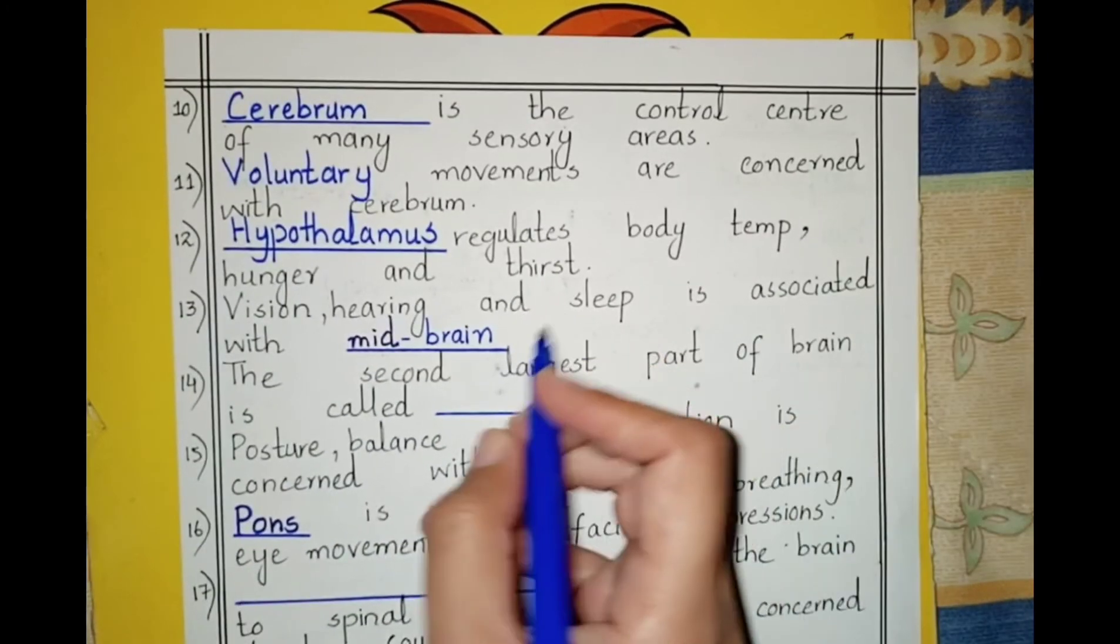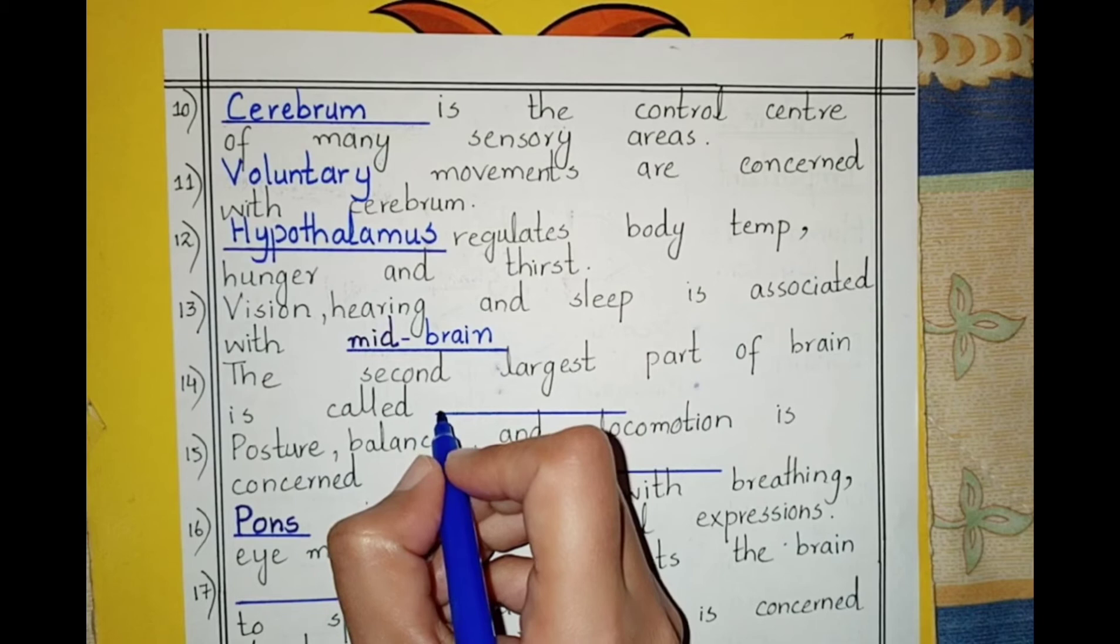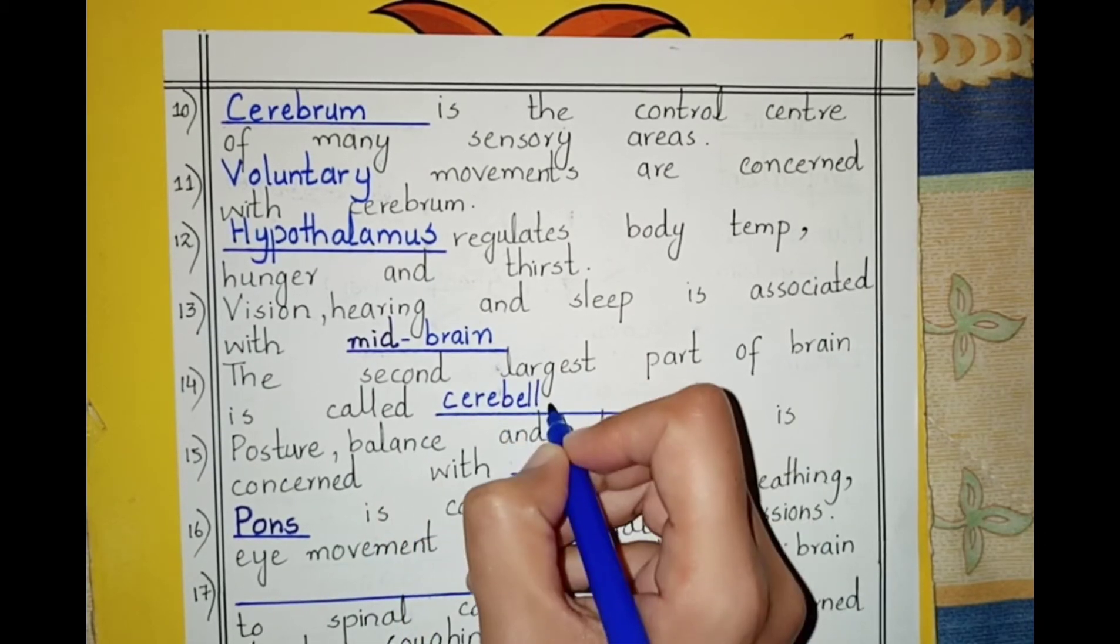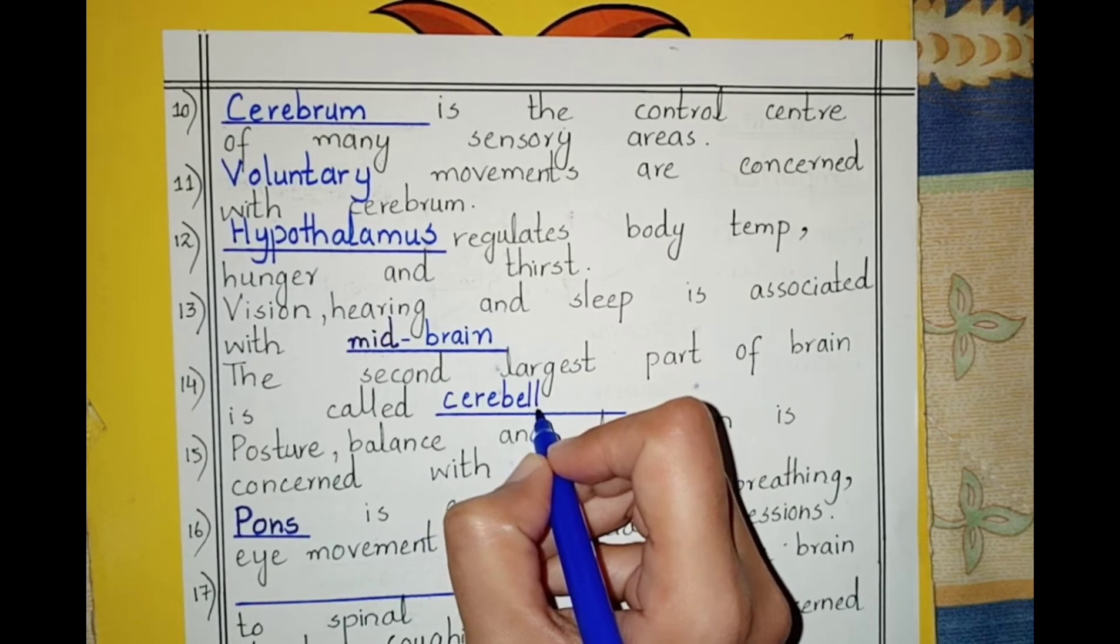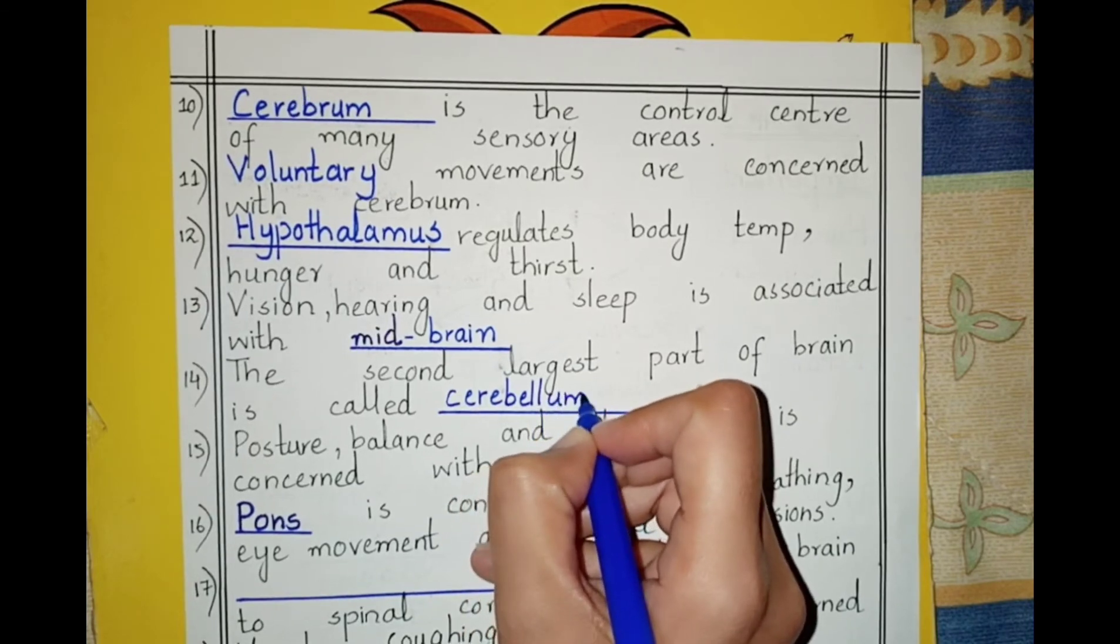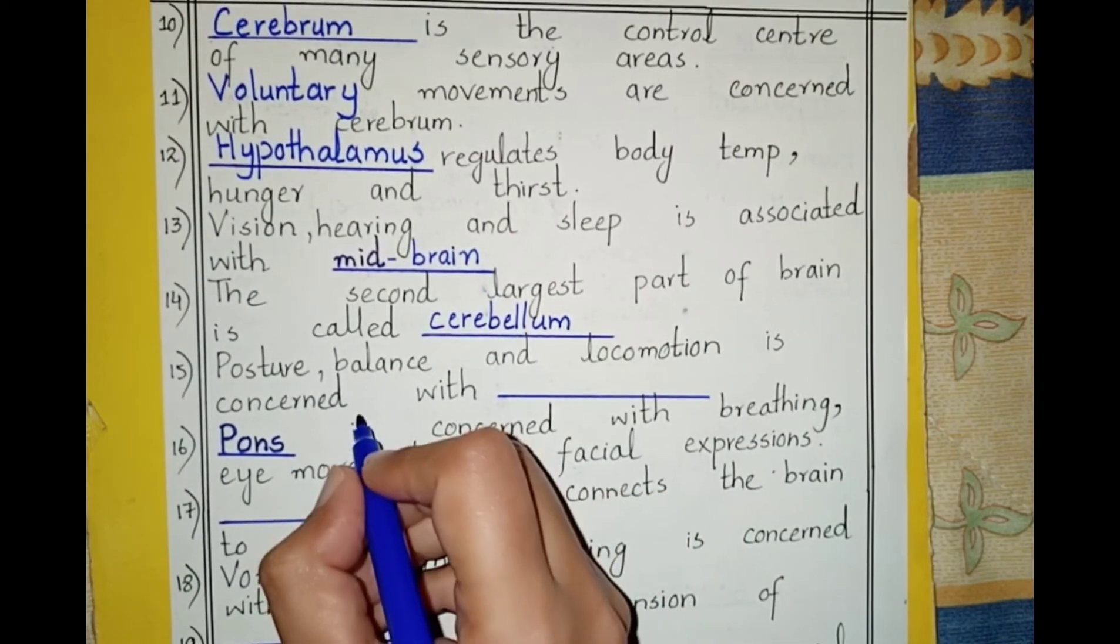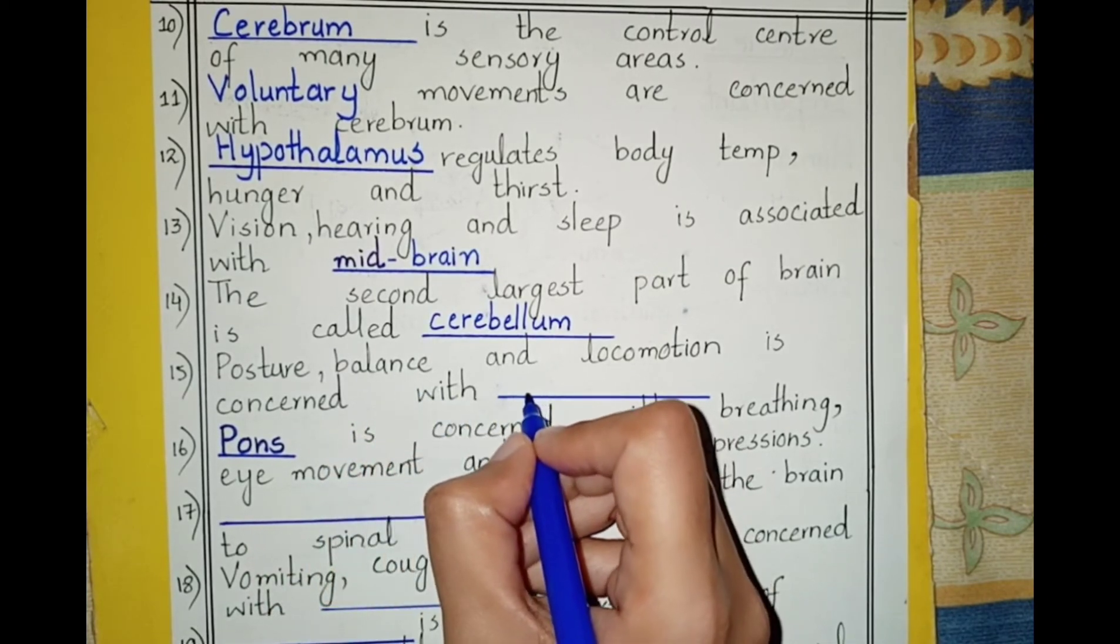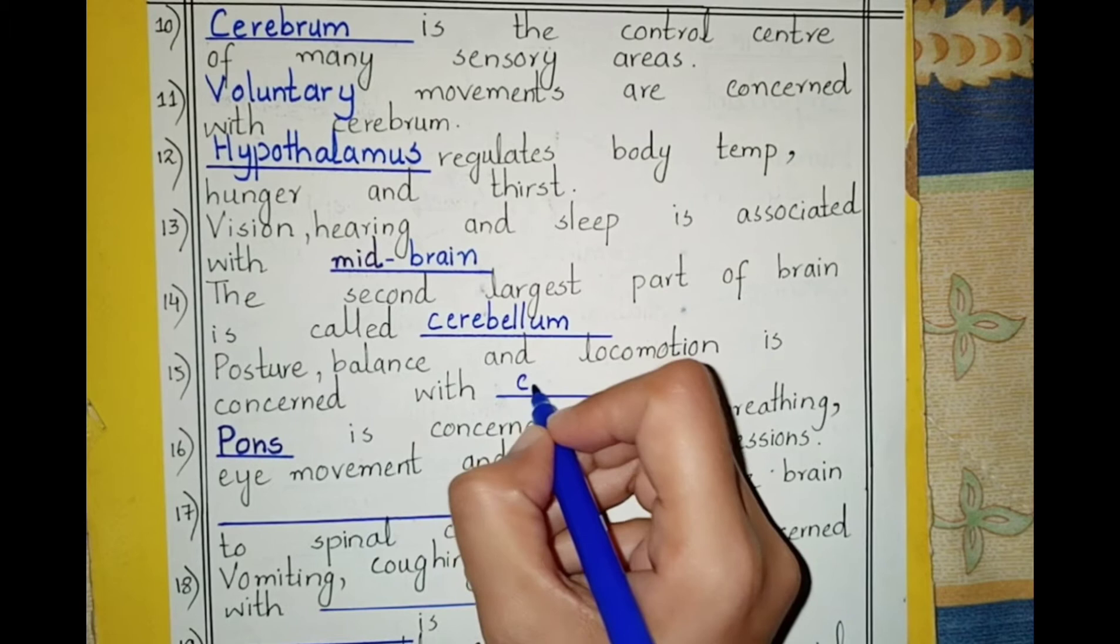The second largest part of the brain is called the cerebellum. The first one is cerebrum and the second one is cerebellum. Posture, balance, and locomotion are concerned with the cerebellum.